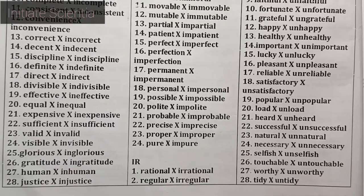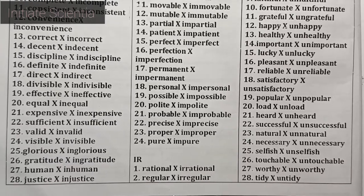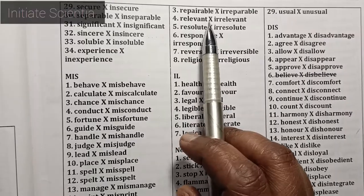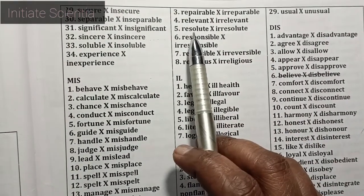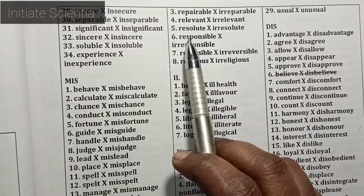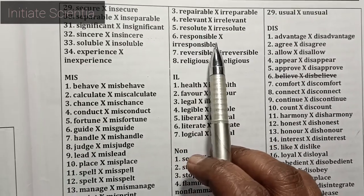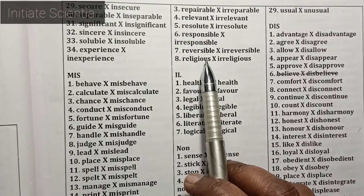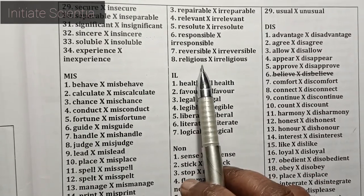Next, the prefix IR: rational – irrational, regular – irregular, repairable – irreparable, relevant – irrelevant, resolute – irresolute, responsible – irresponsible, reversible – irreversible, religious – irreligious.